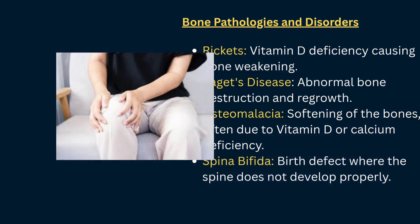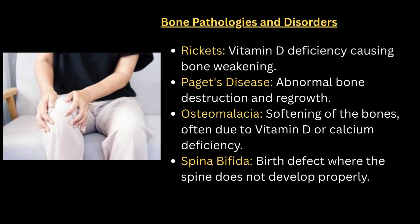Next, coming to bone pathologies and disorders. Main conditions are: rickets — vitamin D deficiency causing bone weakening; Paget's disease — abnormal bone destruction and regrowth; osteomalacia — softening of the bone due to vitamin D or calcium deficiency; and spina bifida — a birth defect where the spine does not develop properly.